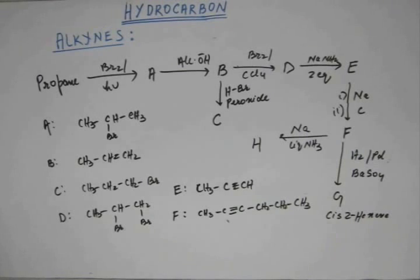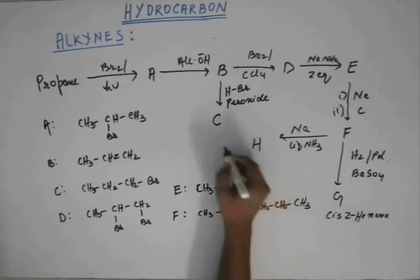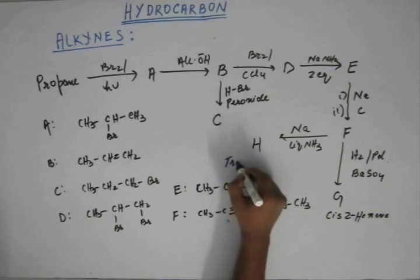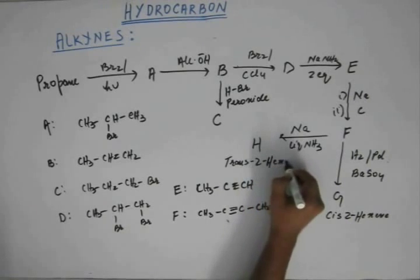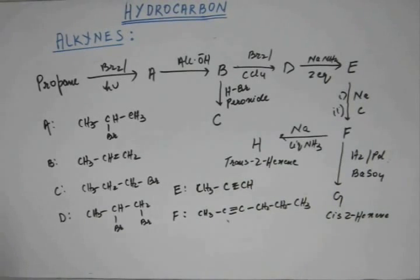And this is sodium in liquid ammonia carries out trans-reduction of alkyne. That means alkyne gives a trans-alkene. So, H will be trans-2-hexene. Now, how this happens? We have to go back and study them. H would be trans-2-hexene. Easy conversion, isn't it? Fine. So, this completes our method of preparation of alkyne. So, we move on to reactions of alkyne.